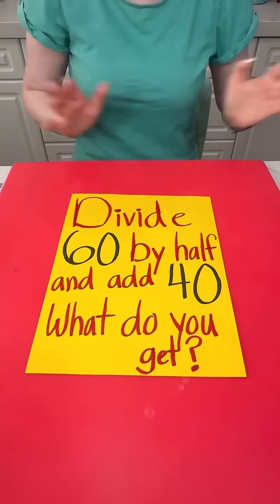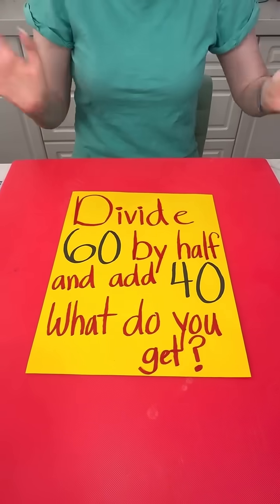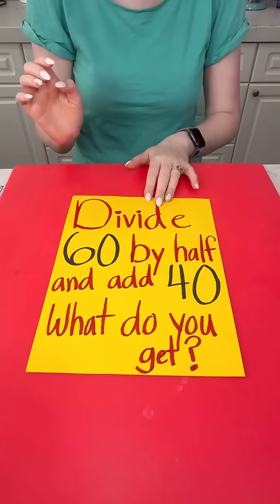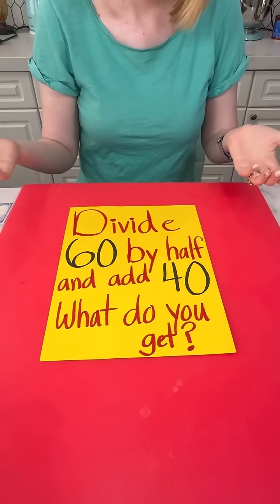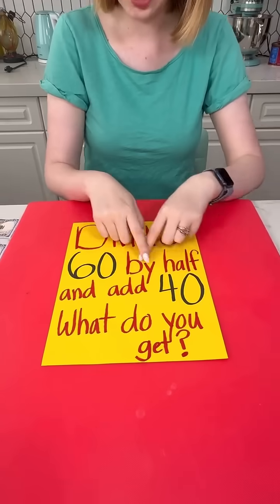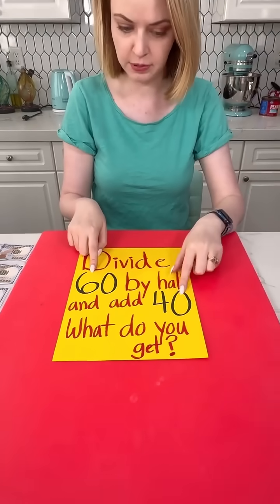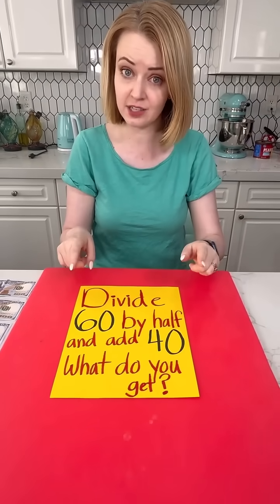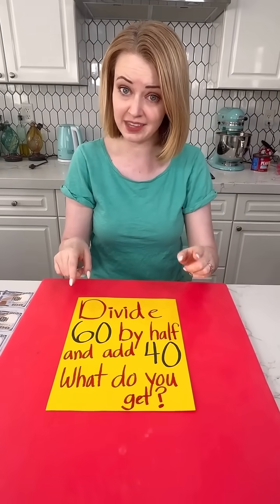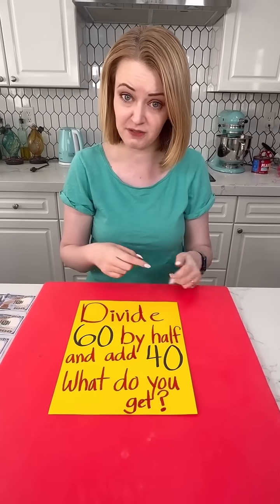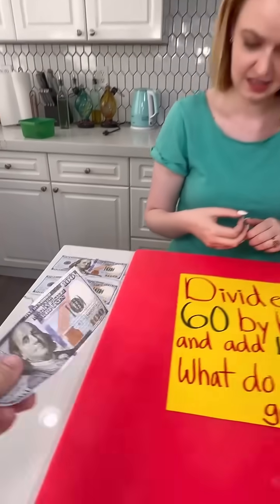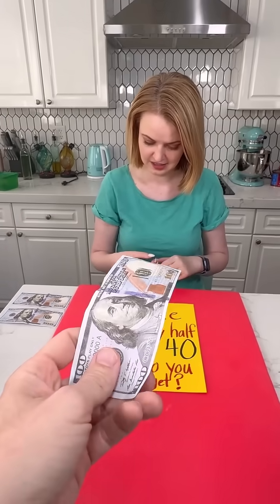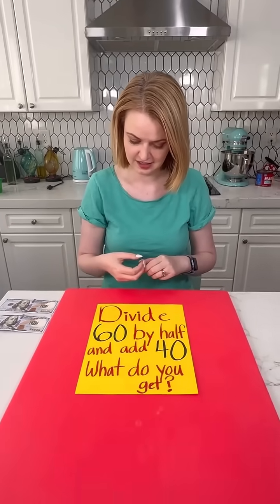I wasn't guessing it again, I was trying to understand why it was wrong and I don't understand it. Okay, so I'm not saying 70 again, I'm just guessing something else. So do I add it? So 60 plus 40 is 100, then you divide that by half, so is it 50? Also wrong. Now you've lost $300 in 50 seconds.